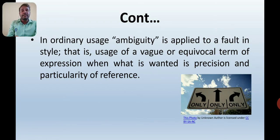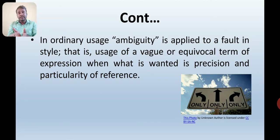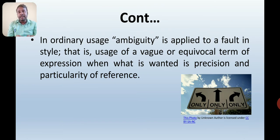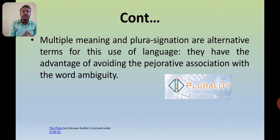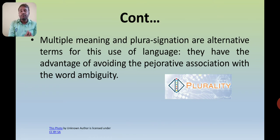Look at the picture there. It suggests only one direction, but which way is to go? There is no clarity about that, and ambiguity is like that. Ambiguity is having more than one meaning — indeterminate meanings. Multiple meaning and plural signation are alternative terms for this use of language.